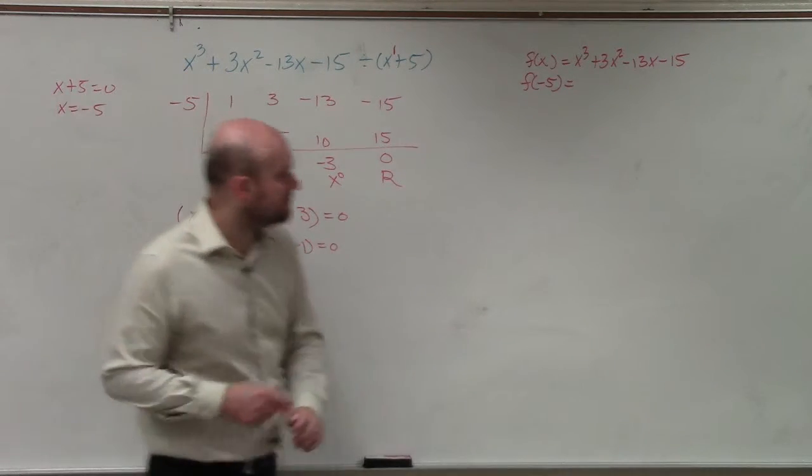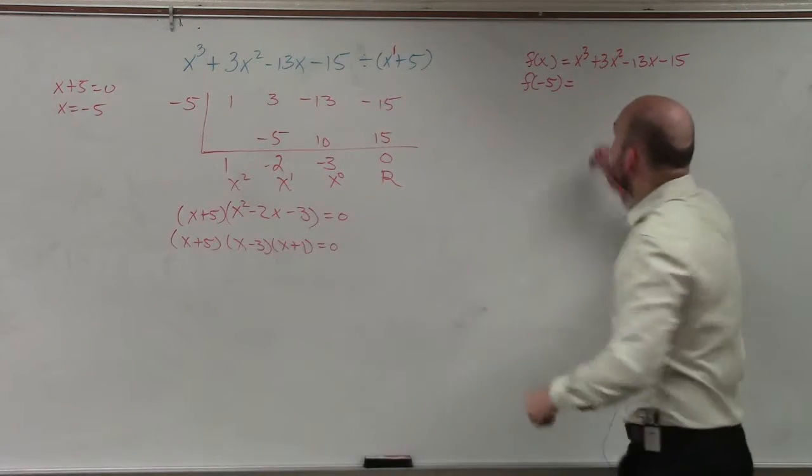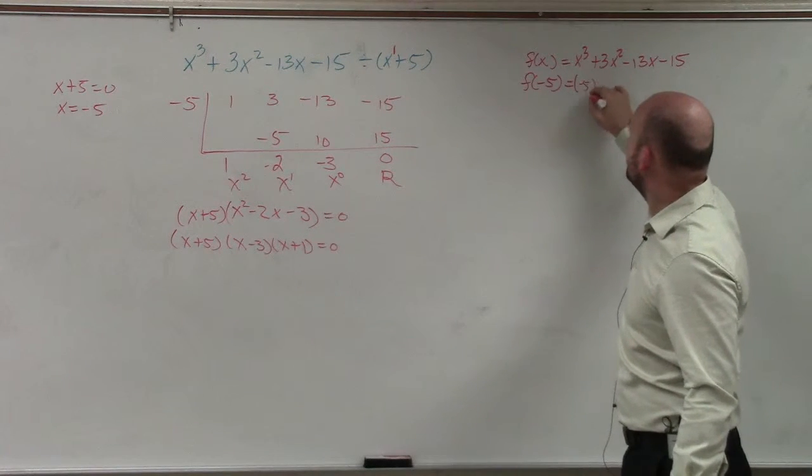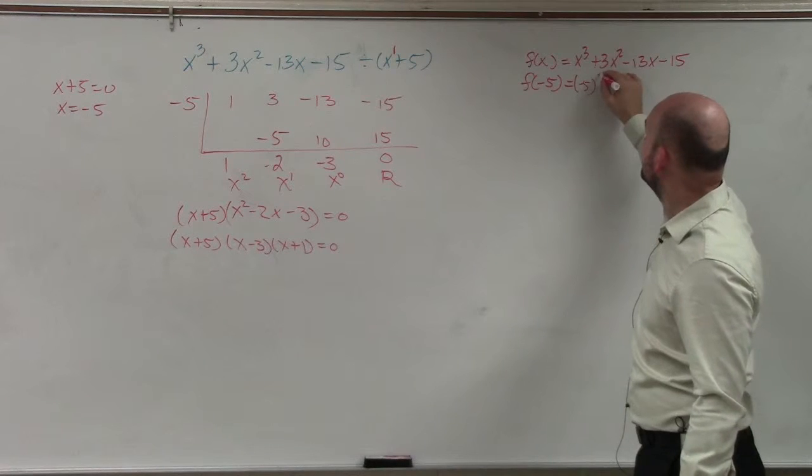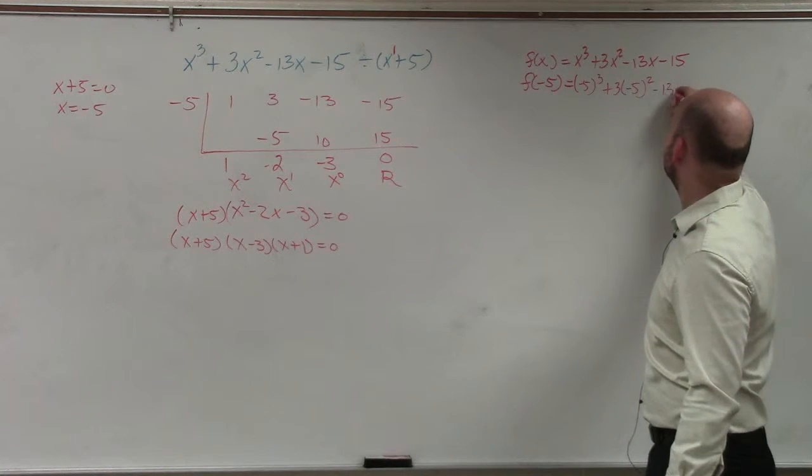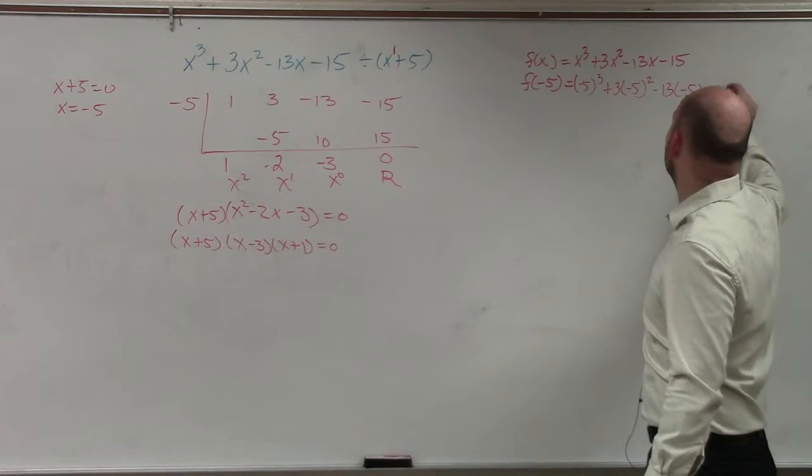However, that's not really the main purpose of what I wanted to go over. Over here, if you know what negative 5 is, you need to plug it in. So I said, if you have f of x and you plug in negative 5 cubed, plus 3 times negative 5 squared, minus 13 times negative 5, minus 15.